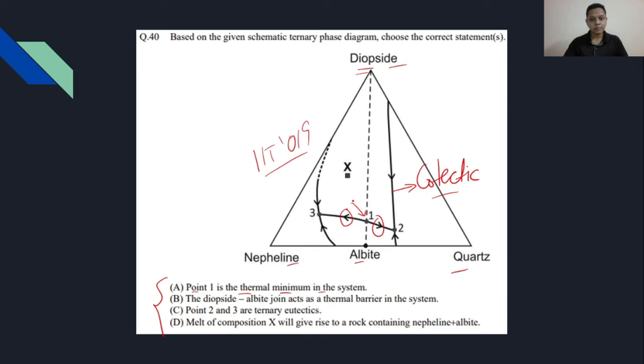Imagine this situation: your point 1 is here and you have the situation something like this, by which you can see that both of these arrows or any magma falling on either side will proceed away from this point 1.